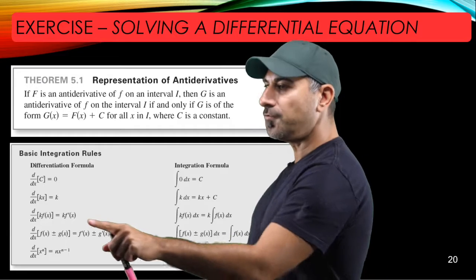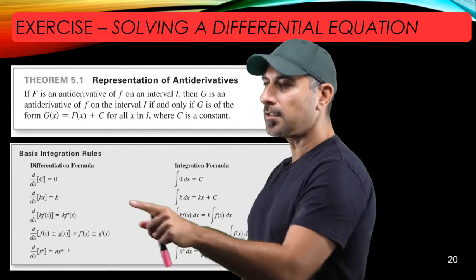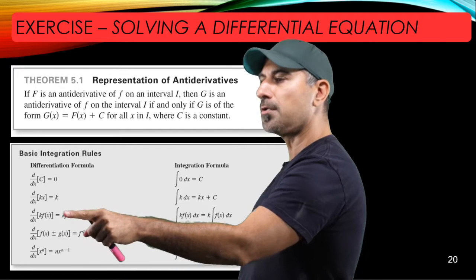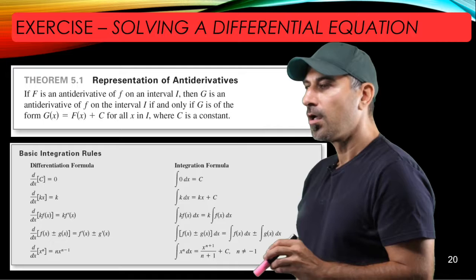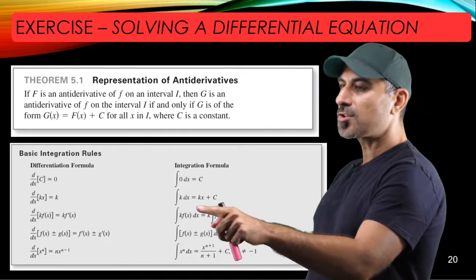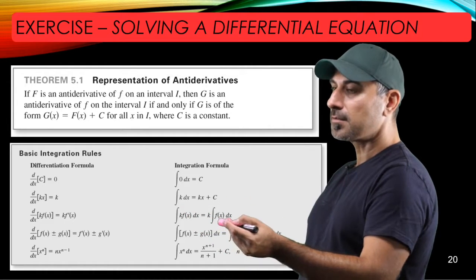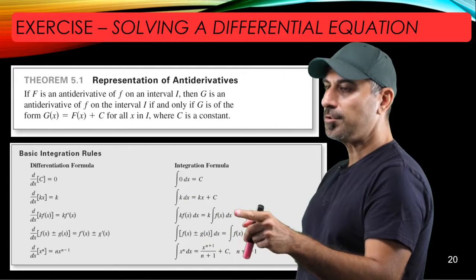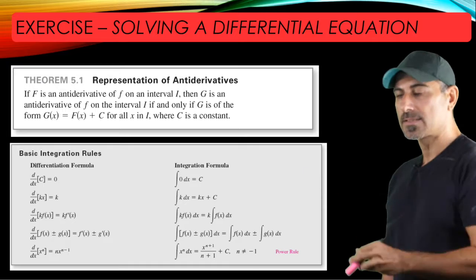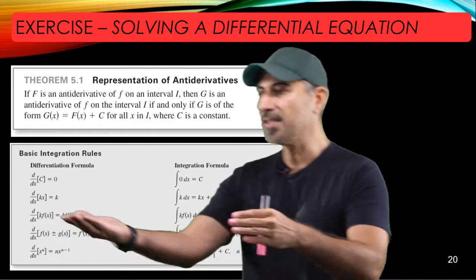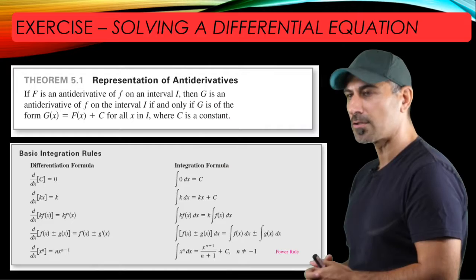If you take the derivative of a constant multiple of a function, it's the same as taking the derivative of the function first and multiplying by k. Similarly, if you start with k times f(x) and integrate, you pull the constant out and just integrate f, then multiply by that constant. In both cases you can always pull out the constant, perform the operation, and put the constant back as a constant multiple.